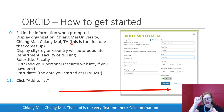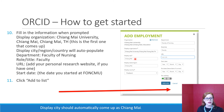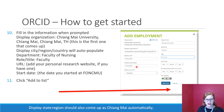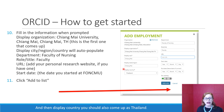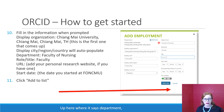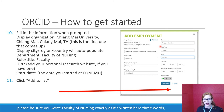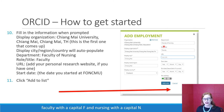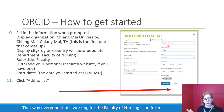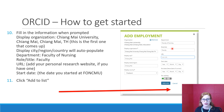A dropdown menu will appear, and 'Chiang Mai University, Chiang Mai, Thailand' will be the very first option — click on that. Display city should automatically come up as Chiang Mai, display state/region should also come up as Chiang Mai automatically, and display country should come up as Thailand. Where it says Department, please be sure to write 'Faculty of Nursing' exactly as written: three words, with a capital F in Faculty and a capital N in Nursing.